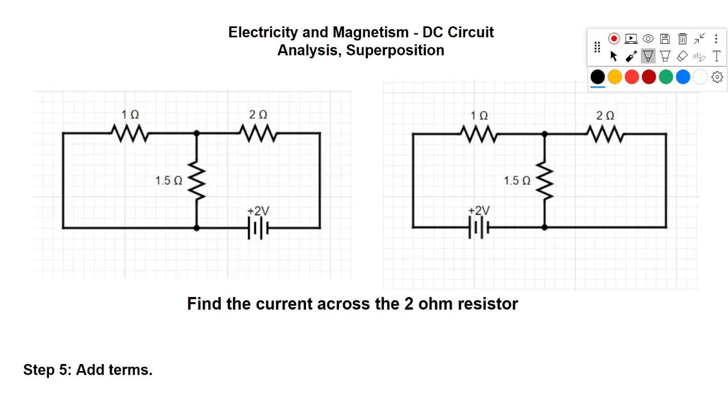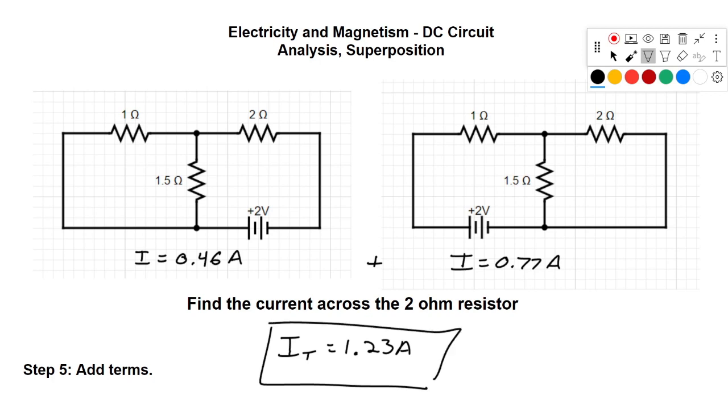Now our final step. We're going to take the current that we read over here, which was 0.46 amps, and we're going to add that to the current value we read over here, which is 0.77 amps. We'll get a total current value through the 2 ohm resistor of 1.23 amps. And now we've solved this using superposition and we haven't had to break out Kirchhoff's laws. You very well could use Kirchhoff's laws if you prefer. It's very much a preference, and we'll have another video where we cover those.